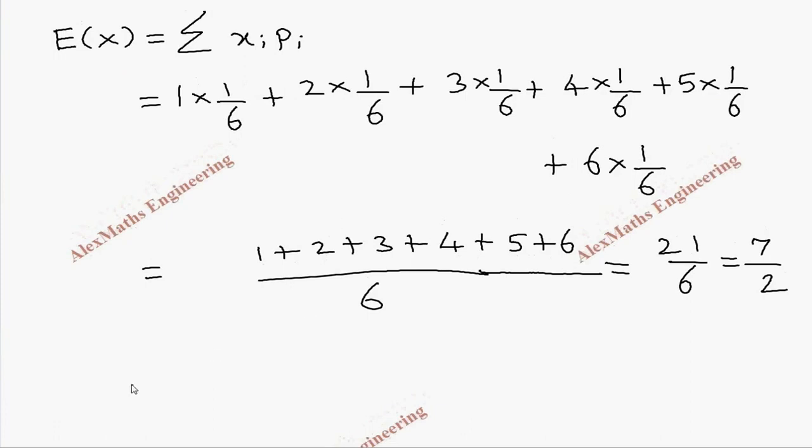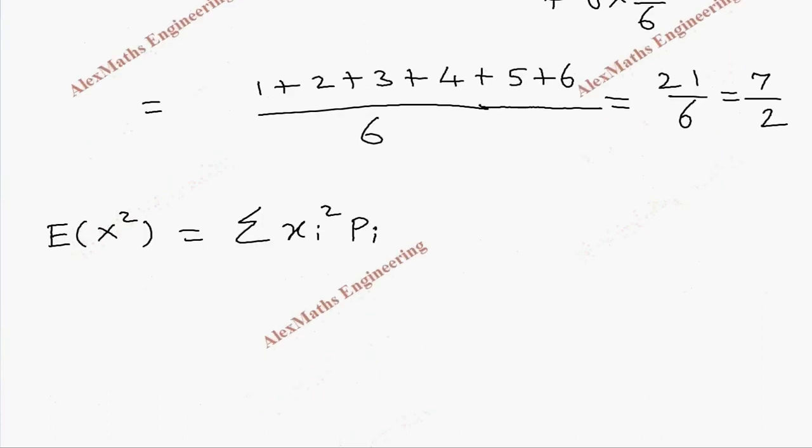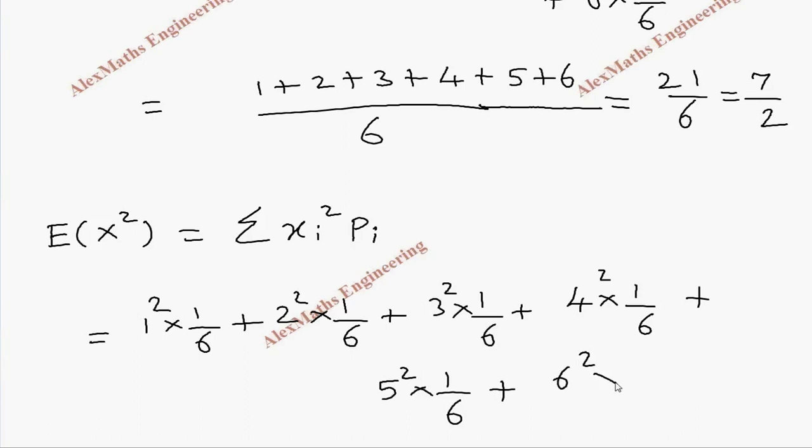Now, E(X²), we have a separate formula. E(X²) is sigma xi² pi. So we have to square the X and multiply corresponding probability. So 1² into its probability is 1 by 6. 2² into 1 by 6. 3² into 1 by 6. 4² into 1 by 6. Then 5² into 1 by 6. Then 6² into 1 by 6.